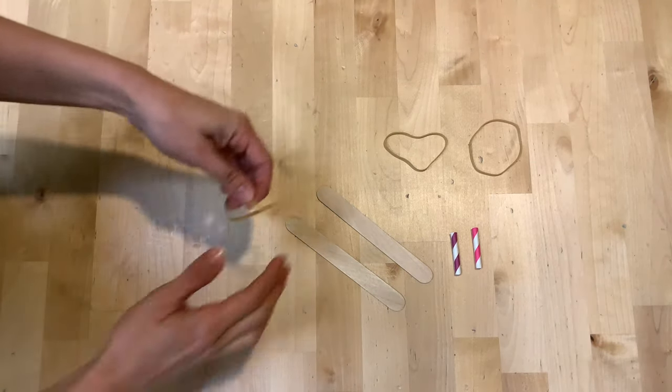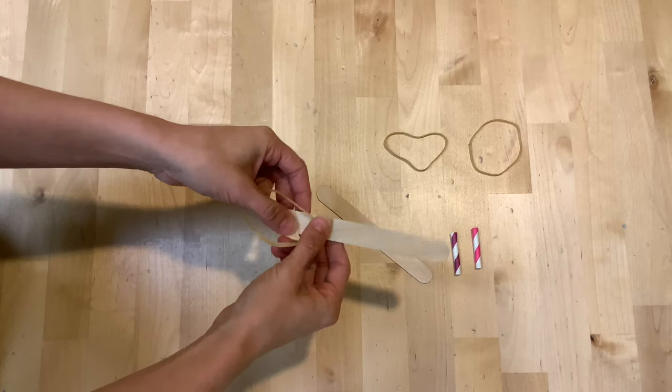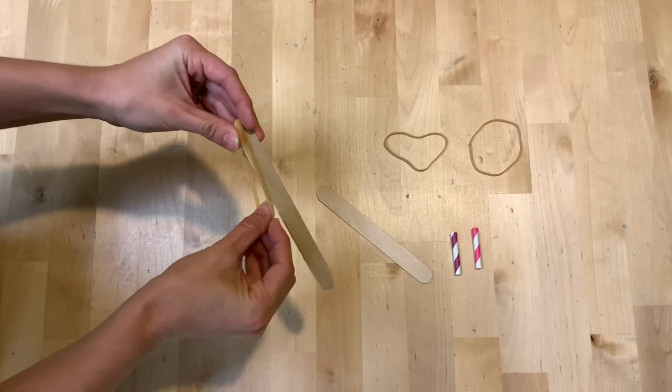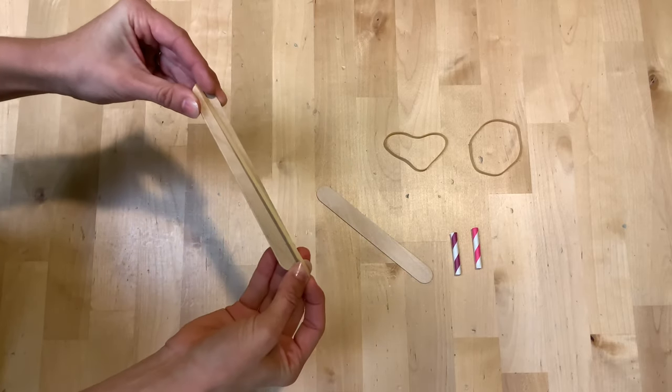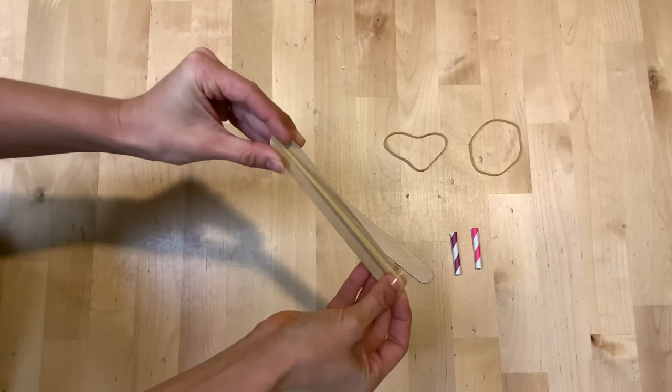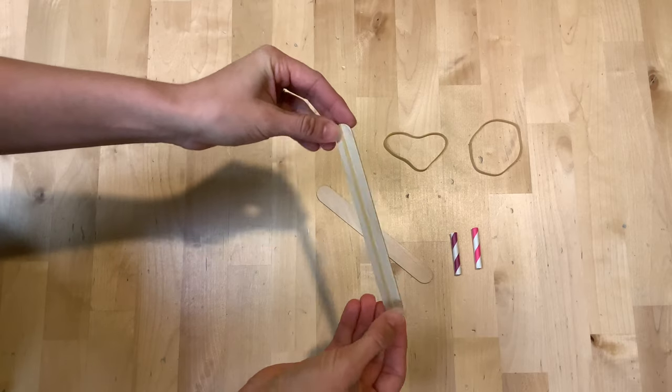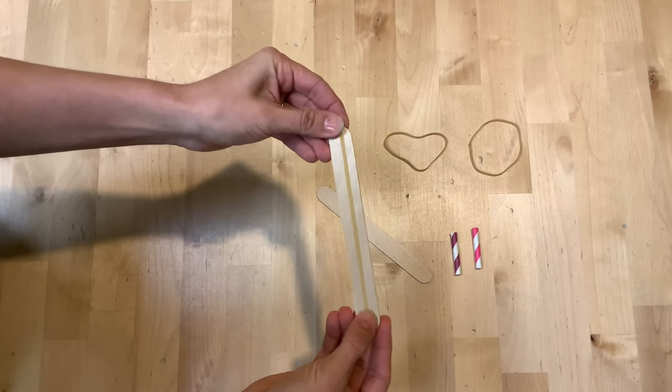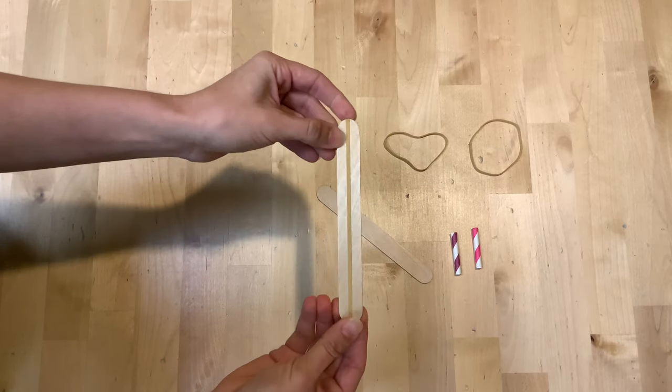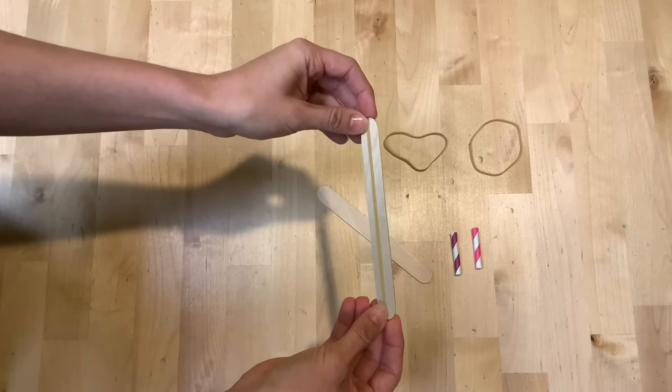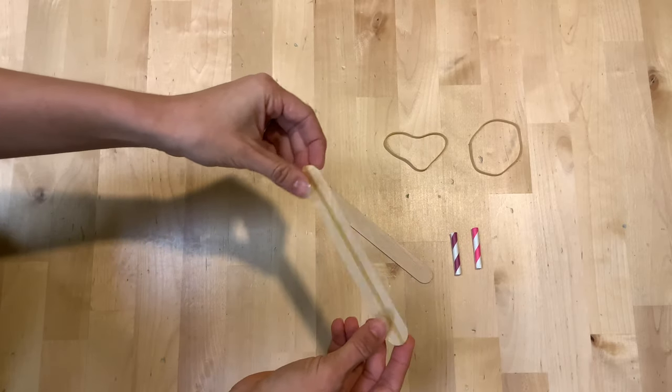First we're going to take one rubber band and one craft stick and you're going to wrap your rubber band around it lengthwise, so long ways. And you want to make sure there's no twists or anything in your rubber band. You want it to lay flat. Might be kind of hard to get it on there, but just maneuver it around a little bit and you'll get it. Great job!